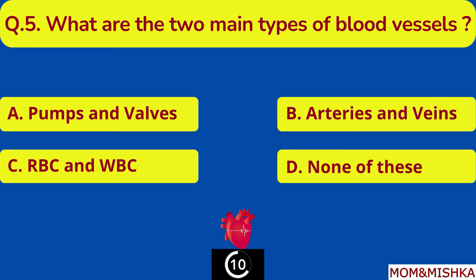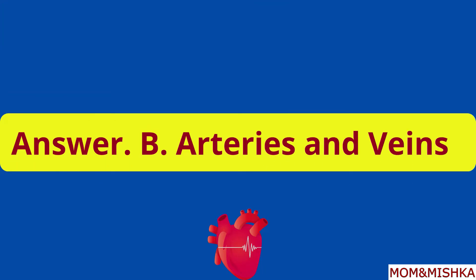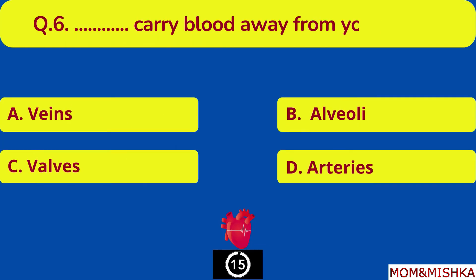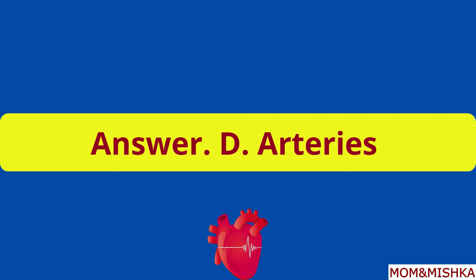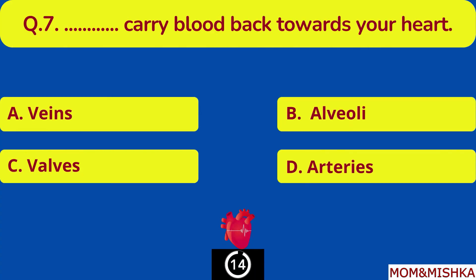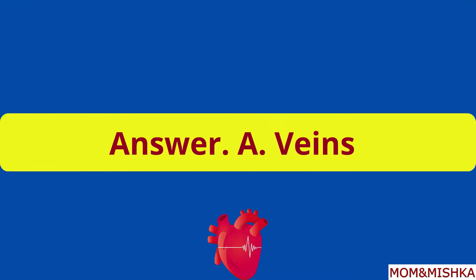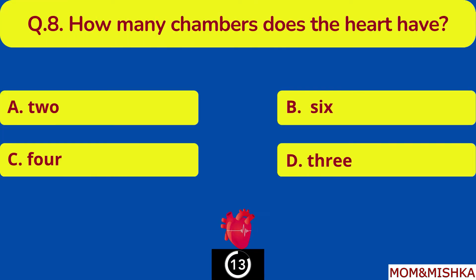What are the two main types of blood vessels? Arteries and veins. Blank carry blood away from your heart — arteries. Blank carry blood back towards your heart — veins. How many chambers does the heart have?